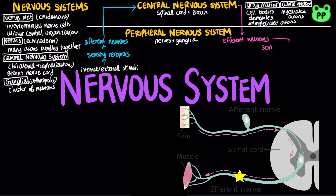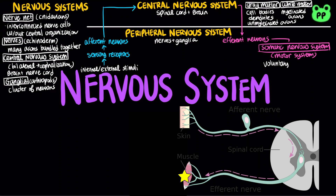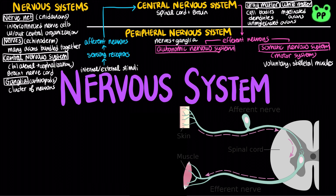The peripheral nervous system has two functional components. The somatic nervous system, or motor system, carries signals to skeletal muscles and is voluntary. The autonomic nervous system regulates the internal environment in an involuntary manner, and includes three divisions.